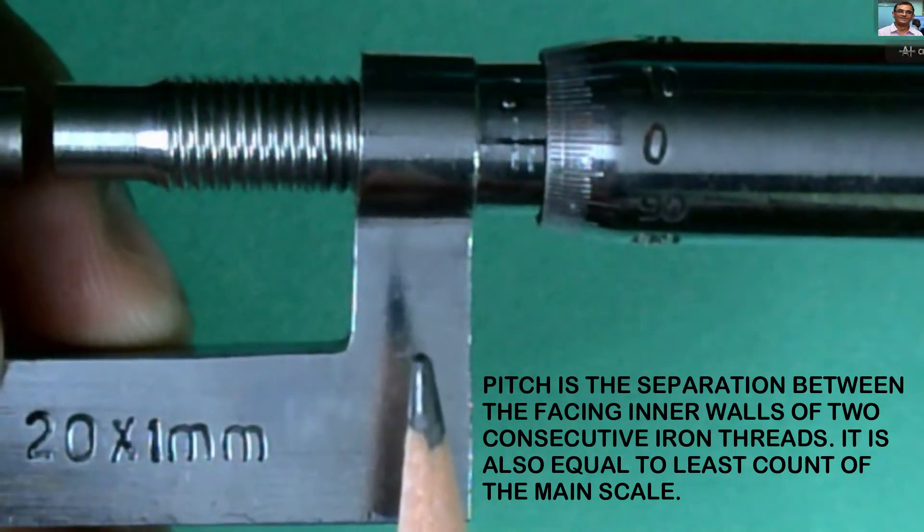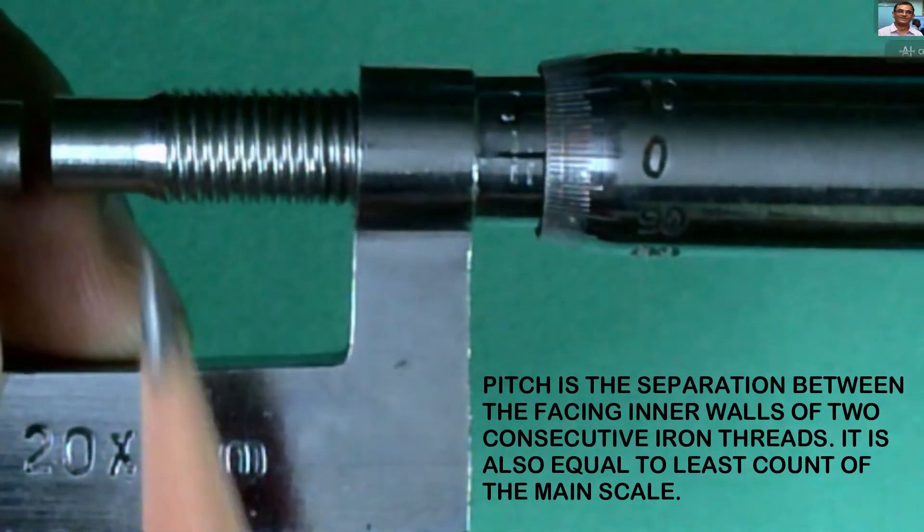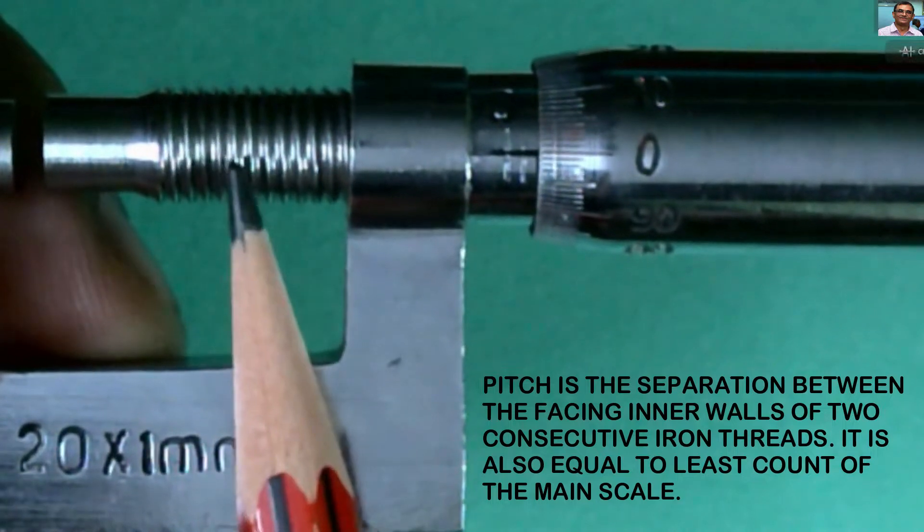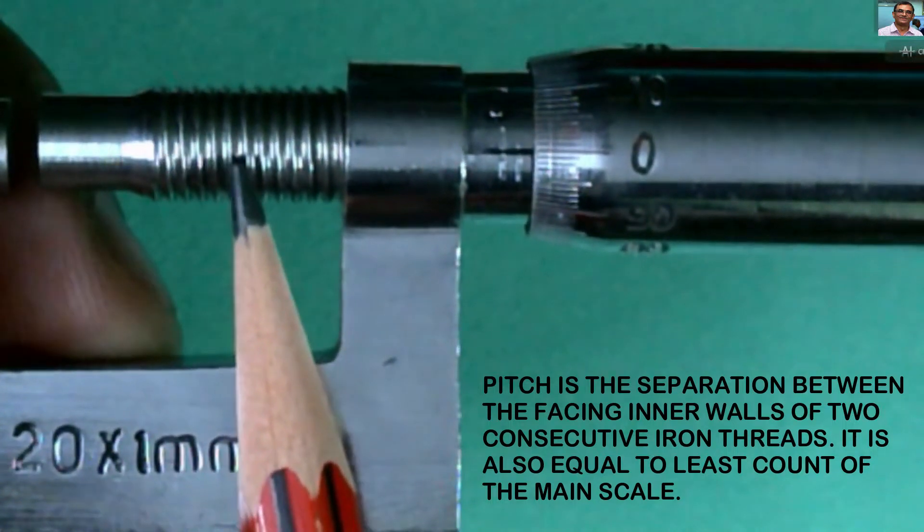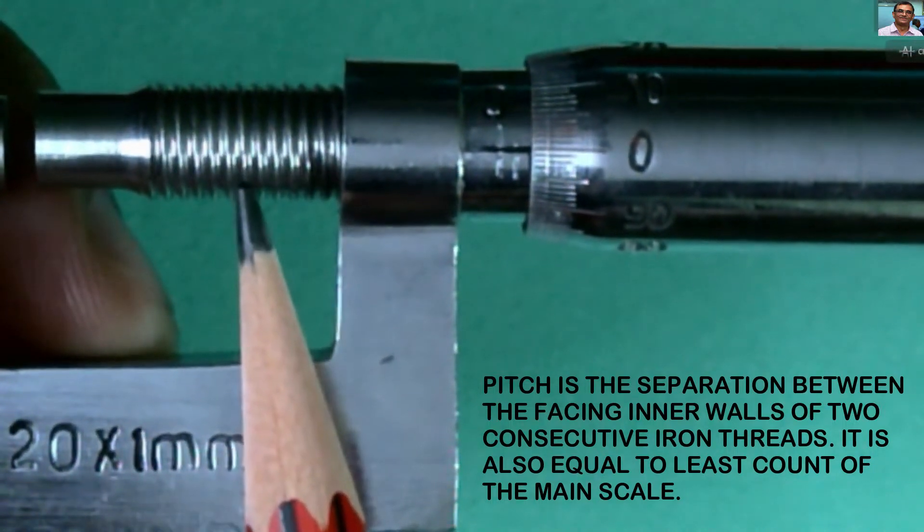You should be able to see the magnified view of the screw gauge. These are the iron threads. Separation between any two consecutive threads is called the pitch.